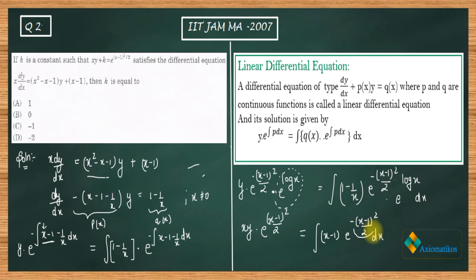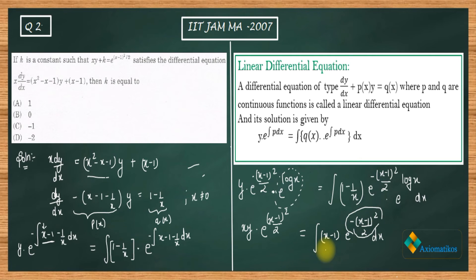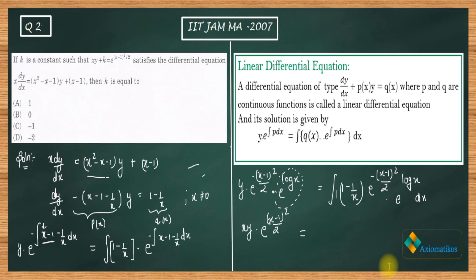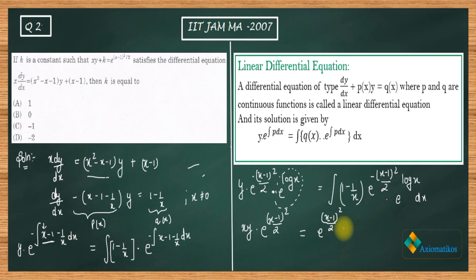To integrate (x−1) · e^(−(x−1)²/2), we use the substitution t = (x−1)²/2, so dt = (x−1) dx. This is a straightforward class 12 integration. After substituting and integrating, the result is minus e^(−(x−1)²/2) plus a constant c.